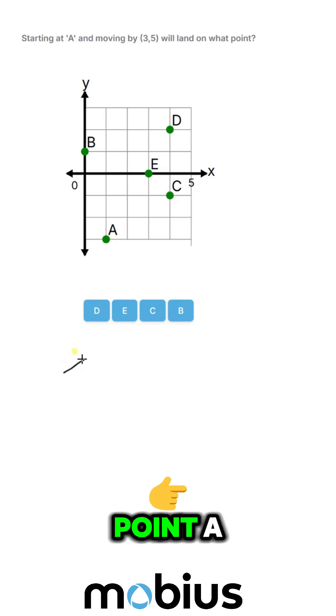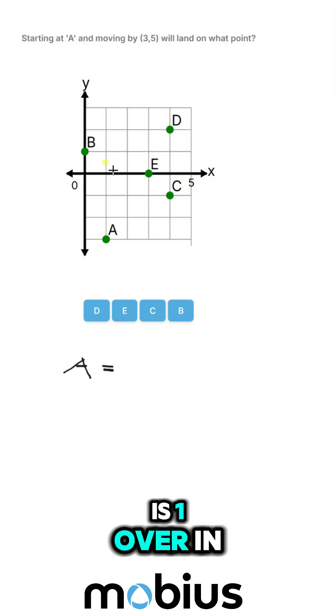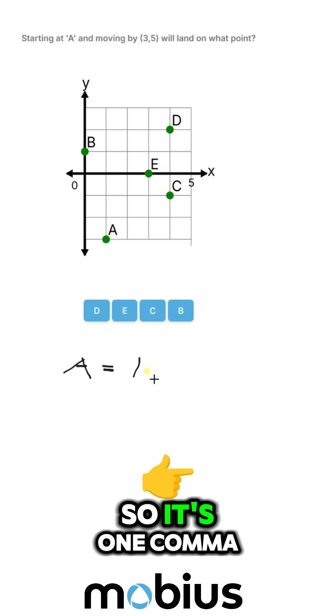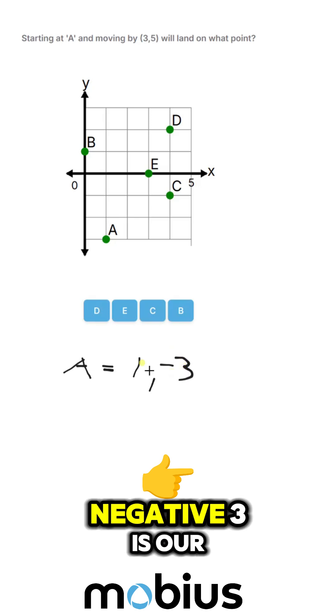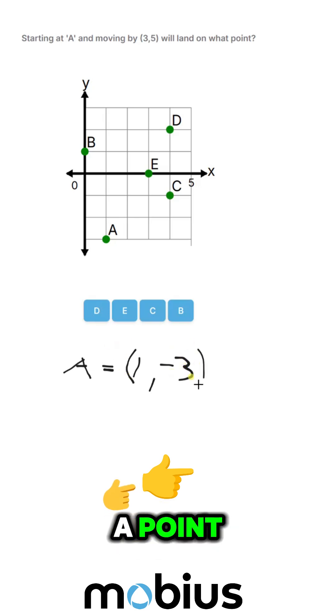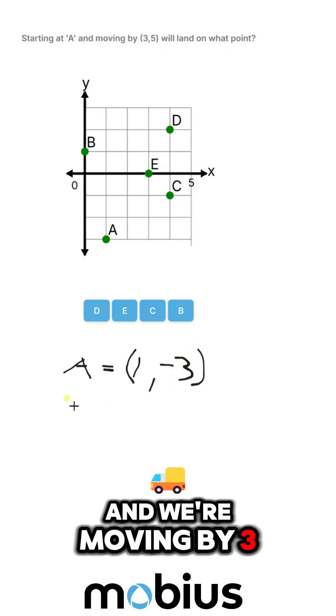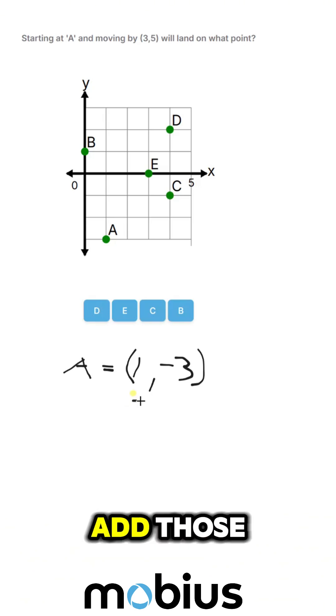So we know that point A is 1 over in the x, so it's at 1, and it's 3 down in the y, 1, 2, 3. So it's 1, negative 3 is our A point, and we're moving by 3, 5. So we're actually just going to add those.